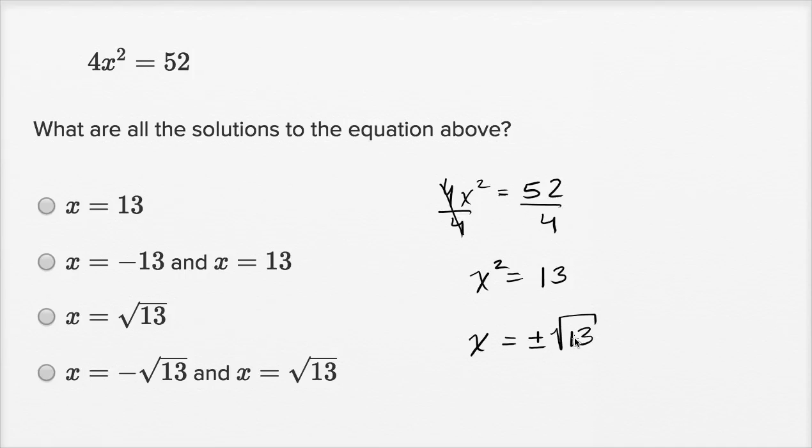And you could check your answer. Take the positive square root of 13. Well if you square it you're gonna get 13, and then multiply it times 4, you're gonna get 52.